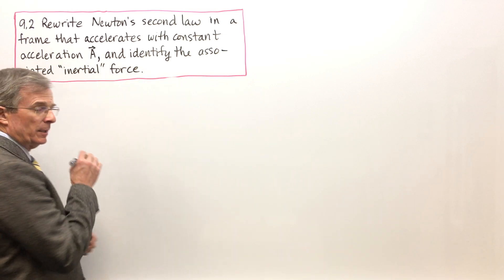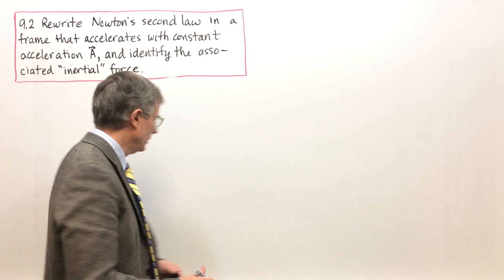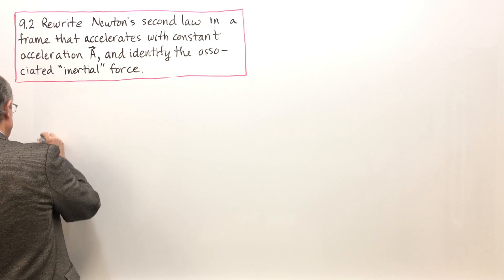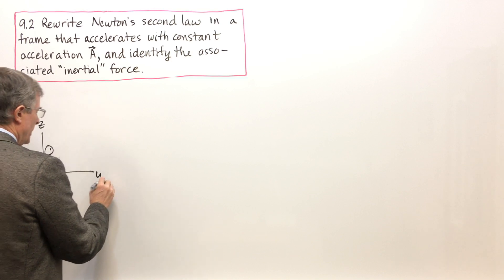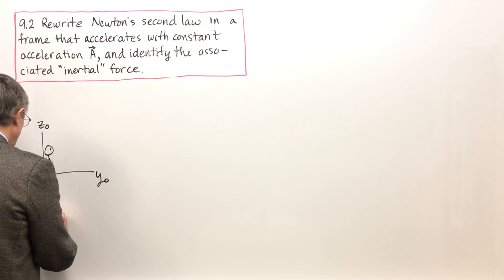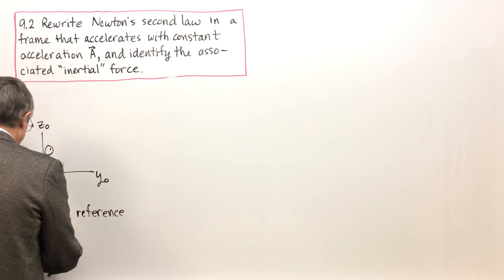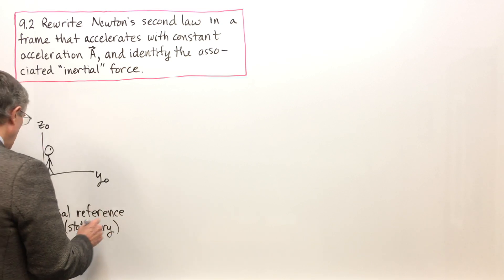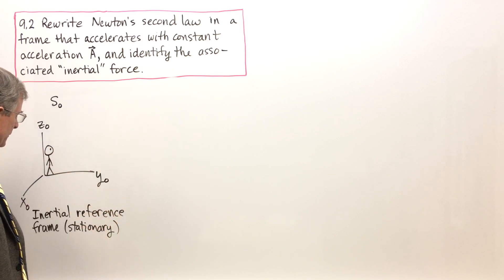Let's start from the point of view of a person standing beside the railroad tracks looking at the accelerating rail car. He's standing here on terra firma. Here's his coordinate system — I'm going to call this x-naught, y-naught, and z-naught. This is the inertial reference frame. It is stationary, not moving. We're going to call it S-naught, meaning the stationary inertial reference frame.